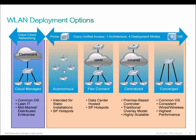Cloud managed, which we just described. Autonomous is where we came from originally in the very beginning of all wireless — everything was kind of autonomous. FlexConnect we'll talk about in detail later. Centralized and converged — a lot of people mix those terms and use them interchangeably, but that's actually not supposed to be the case. They are distinctly different deployment architectures from Cisco's perspective.